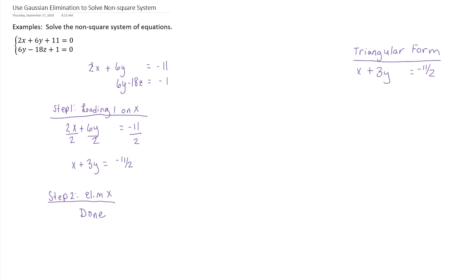So then I would move on to step 3, which is getting that leading 1 on y. If we look at our equation that has the leading y, it's 6y minus 18z equals negative 1. I want a leading 1 on y, so I'm going to divide off 6 from every term. I get y minus 3z equals negative 1 sixth. So then that's part of my triangular form.